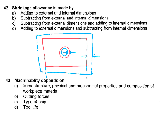For example, if our final component has 100 mm length, then for the pattern it is 105 mm. And for the hole, if the final diameter is 30 mm, then for the pattern this diameter should reduce to 27 mm — subtracting from internal dimension and adding to external dimension. So for shrinkage allowance, answer is A.